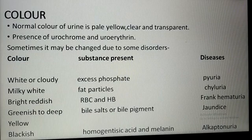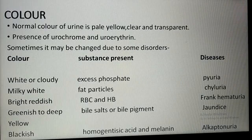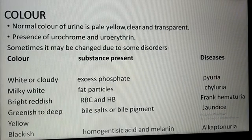The normal pale yellow color is due to the presence of urochrome and urethrin, but it may change due to some disorders. There are three columns to consider: color, substance present, and disease. White or cloudy urine is called pyuria, with excess phosphate present. Milky white color urine is called chyluria, meaning fat particles are present in the urine sample.